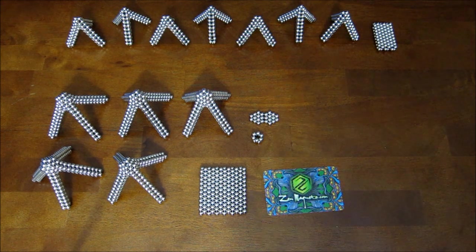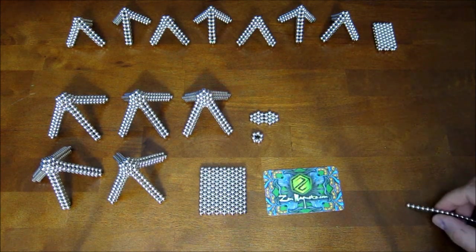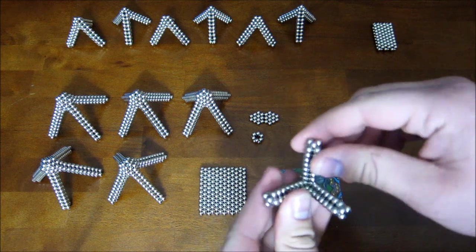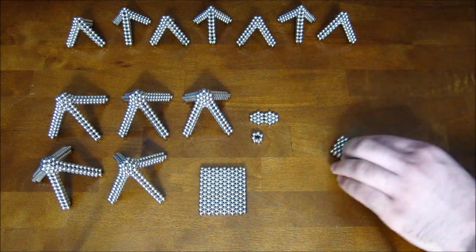You're also going to need, if you want to build the type A or the fully stellated version, you're going to need eight of these. And these are pretty much just regular three-sided points. But I'll show you how to make them real quick.